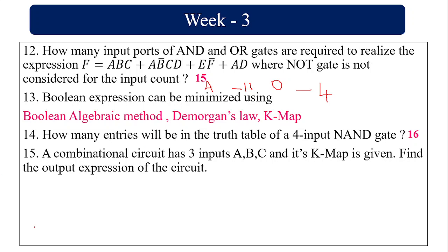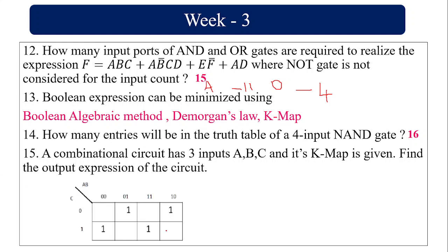For the combinational circuit with three inputs A, B, C and the given K-map, four isolated literals cannot be grouped further. Taking each individually: ĀBC̄, AB̄C̄, ĀB̄C, and ABC. So the output expression is F = ĀBC̄ + AB̄C̄ + ĀB̄C + ABC.